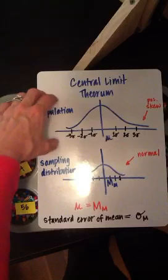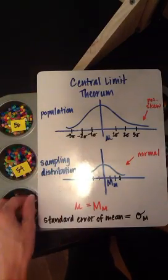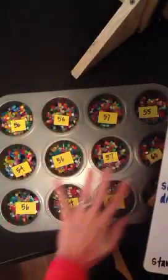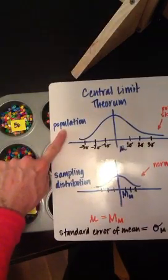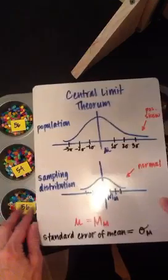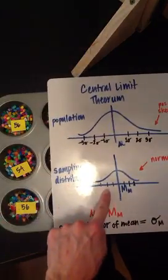So even though my population is not perfectly normal, the sampling distribution that I get from it, from taking repeated random samples from my population and then taking the distribution of all of their means, that sampling distribution will be a perfectly normal curve.